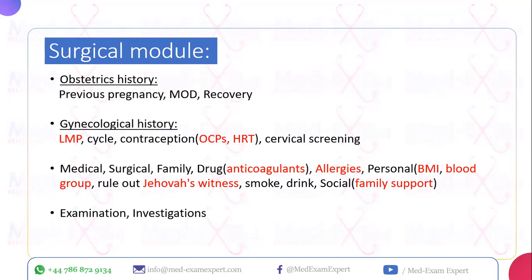Ask about cycle regularity for elective clinic patients, but not necessarily in emergencies. Ask about contraception — OCPs or HRT need to be stopped prior to surgery. Cervical screening is relevant in clinic patients. Complete the rest of the template: medical history, past surgical history, family history, and medications such as anticoagulants, which also need to be stopped pre-operatively. Check for allergies to medication and latex.